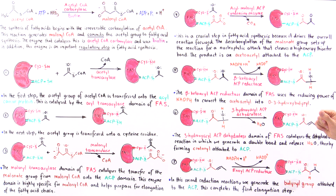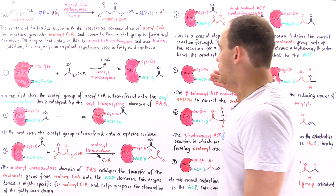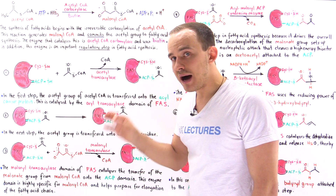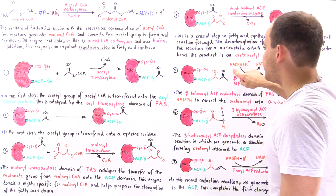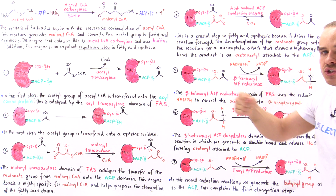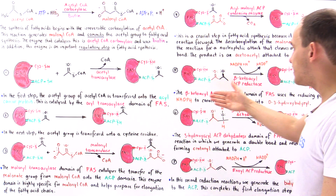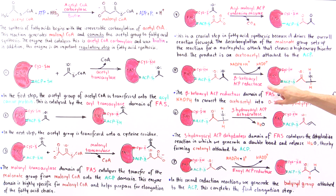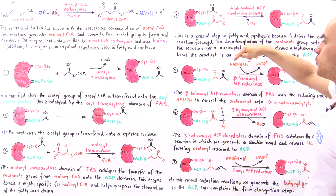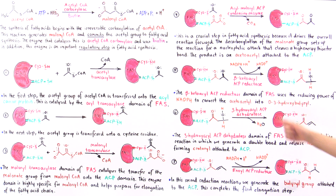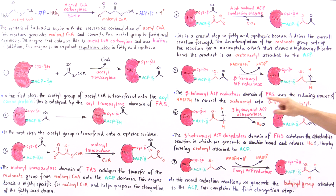In step five, the acetoacetyl group is the reactant. This is a reduction step using NADPH as the reducing agent. The beta-ketoacyl ACP reductase domain of FAS uses the reducing power of NADPH to transform the carbonyl group into a hydroxyl group, generating the D-3-hydroxybutyryl-ACP intermediate. It is called beta-ketoacyl because the starting molecule is a beta-keto compound.